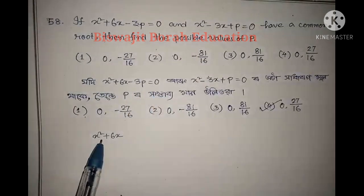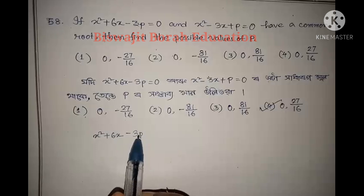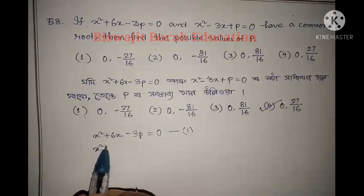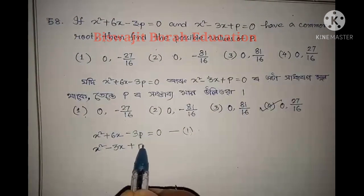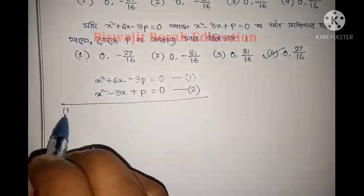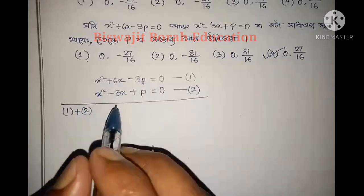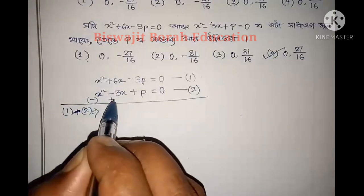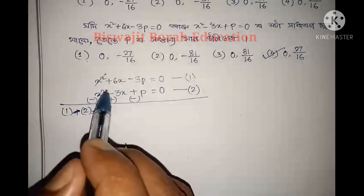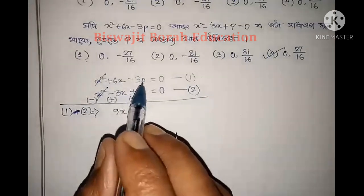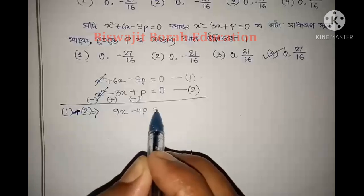Equation two: x squared plus 6x minus 3p equals 0, and x squared minus 3x plus 1 equals 0. We will subtract equation 1 minus equation 2, and we get: the x squared terms cancel, and we have 6x minus 3x which is 9x, and minus 3p minus p which is minus 4p, equals 0.